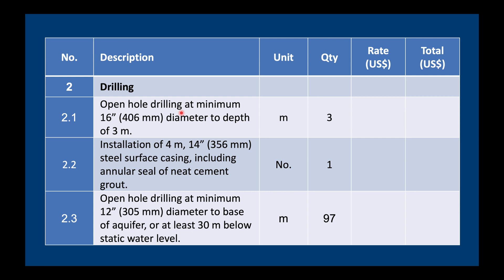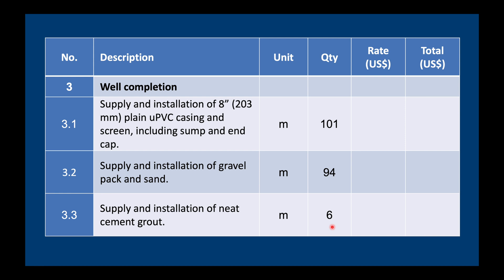Here's an example from Bill number two for drilling. We're going to be drilling the first three meters at 16 inches, install some surface casing, then continue open hole at 12 and a quarter inches down to the bottom of the borehole. The units here are meters and there's an estimated quantity — which of course is not exact and might change quite a lot. For the well completion, we're going to install 8-inch UPVC casing, gravel pack, and some neat cement grout in the top six meters.